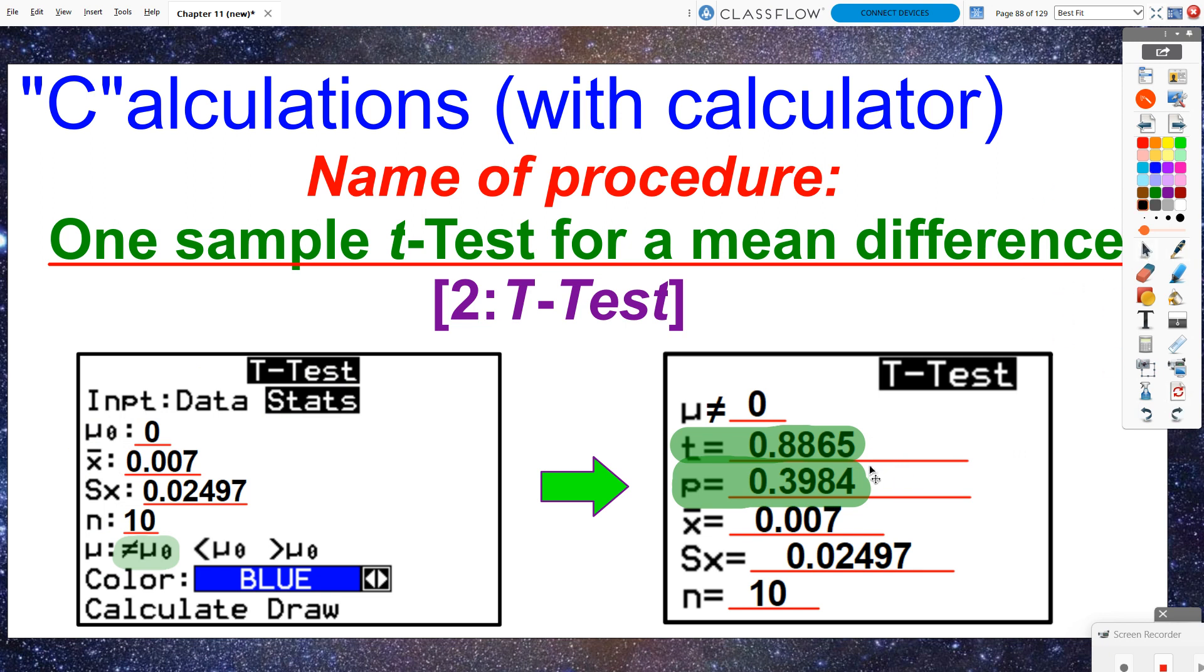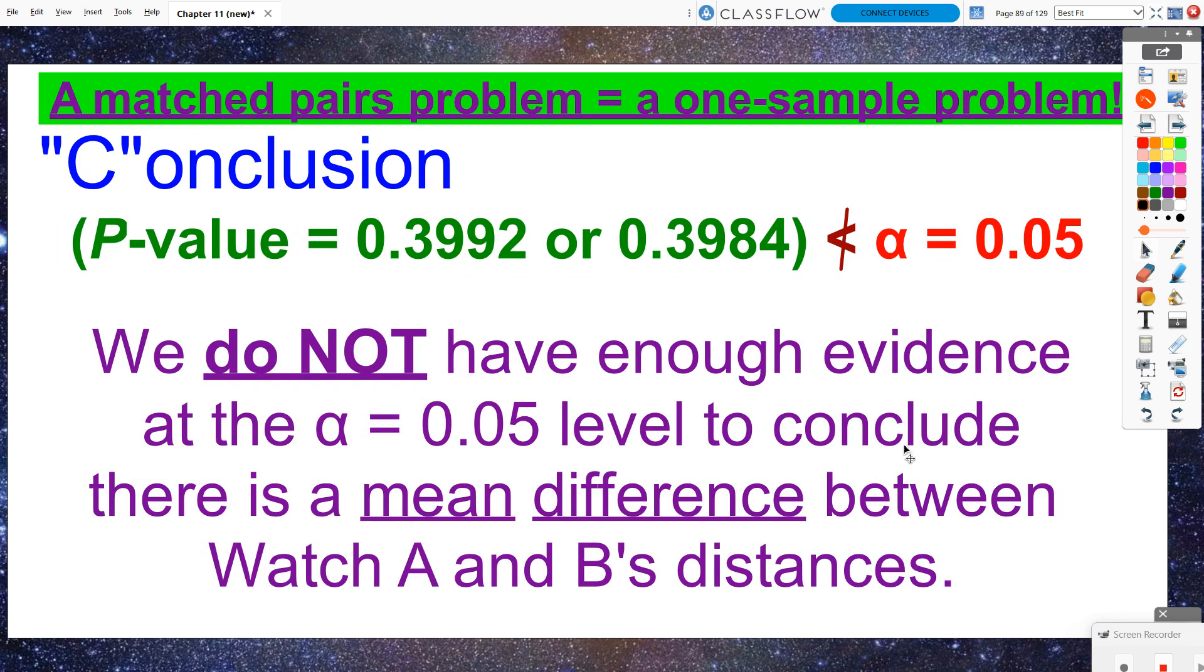Our p-value of either 0.3992 or 3984, both of those are not less than our alpha value of 5%. Therefore, we do not have enough evidence. We would fail to reject the null hypothesis. We do not have enough evidence at the alpha equals 0.05 level to conclude there is a mean difference between watch A and watch B's distances.